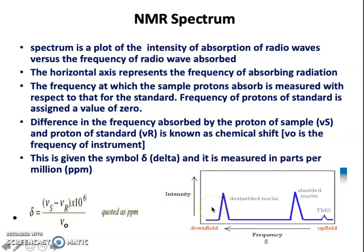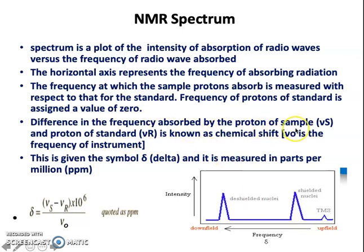The NMR spectrum is a plot of the intensity of absorption of radio waves on the y-axis versus the frequency of the radio wave absorbed on the x-axis. The protons absorb radiation at a particular frequency matching the radio waves, causing spin flipping, which generates a signal. The difference in the frequency absorbed by the proton of the sample and the proton of the standard is known as the chemical shift.